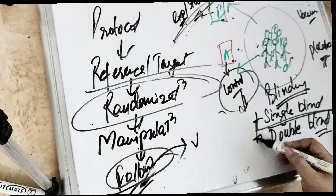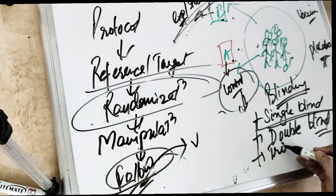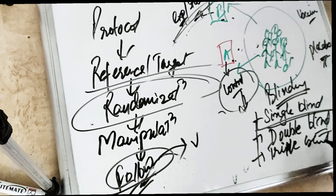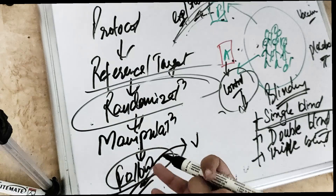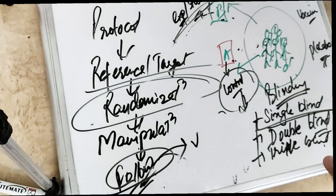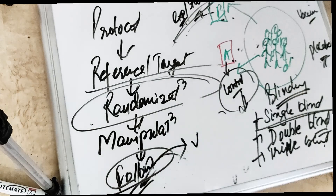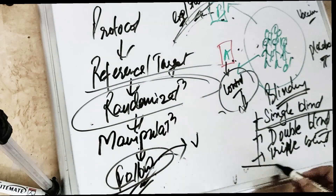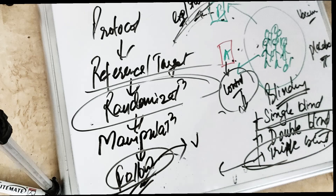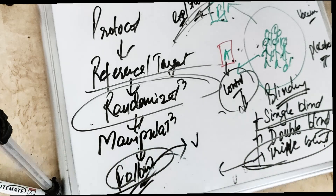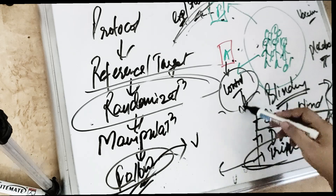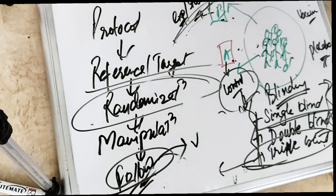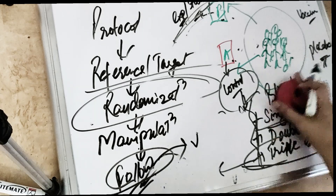Triple blinding is when the analyzer, the investigator or doctor, and the participant — all three — do not know the allocation of the group. This ensures even the analyzer is not being biased. These are all the blinding techniques used to remove bias.